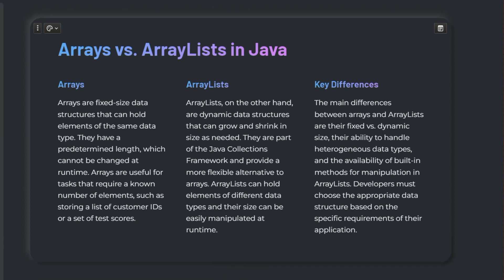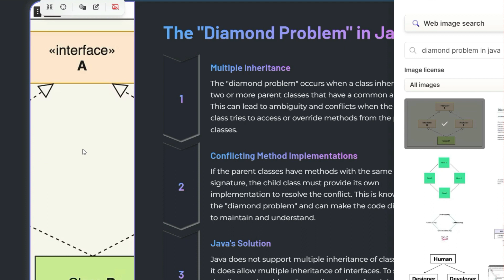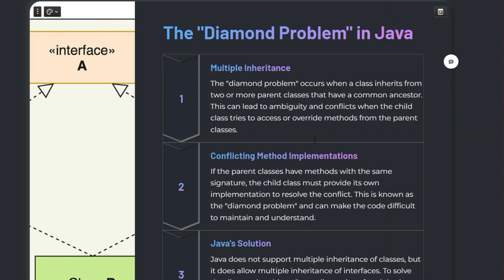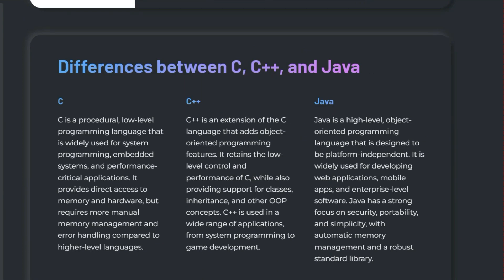The next problem is the diamond problem in Java. As you can see in the picture, the diamond problem occurs in scenarios where a class inherits from two classes that have a common base class. Class D inherits from classes B and C, which both have a common base class A. Java avoids this problem by not allowing multiple inheritance of classes and by using interfaces instead. As you can see, by using interfaces we can solve this problem.